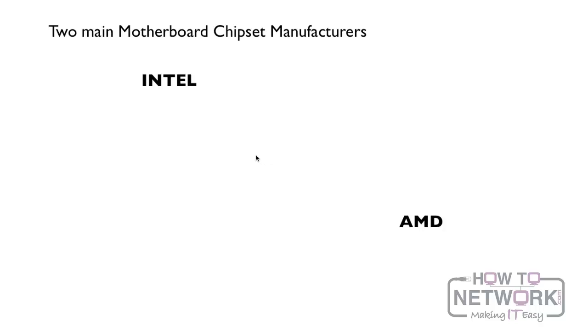When it comes to speed or quality, these are pretty much equal. There used to be arguments about who is better — Intel or AMD — but nowadays that argument is something we don't really hear anymore.